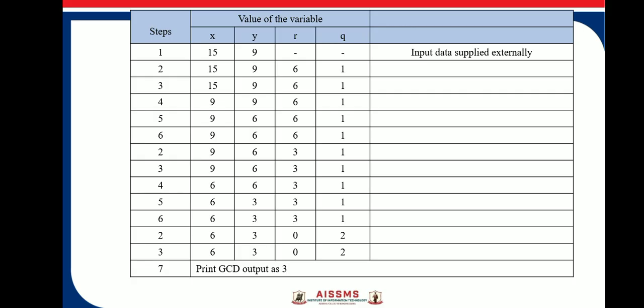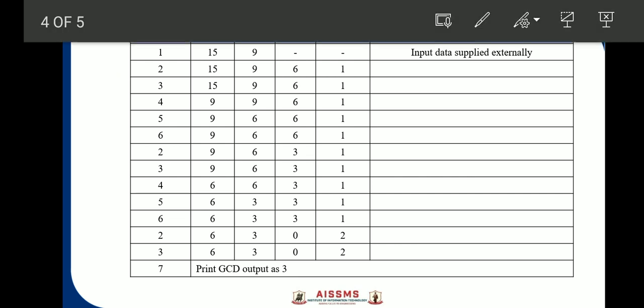Now here, let us consider this example where values X and Y are 15 and 9. Here, the first step is assign first number as X, another number as Y. Then Step 2, what is Step 2? Step 2, in this case, it is